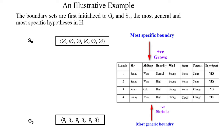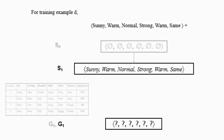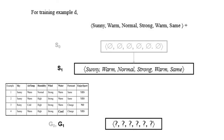Consider the first training example: sunny, warm, normal, strong, warm, same — with target concept yes. Since it is positive, it is compared with S0, and S1 becomes: sunny, warm, normal, strong, warm, same. Since the first training example is positive, it is not considered for G1, so G1 retains all question marks.